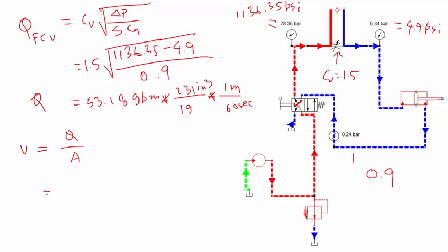So if I plug all these numbers here, let's assume this cylinder is 4 inches of diameter. So the piston diameter is 4 inches. So if I plug in all this number, 53.18 times 231 divided by the area, which is pi by 4, D squared 4 inch times 60 second.